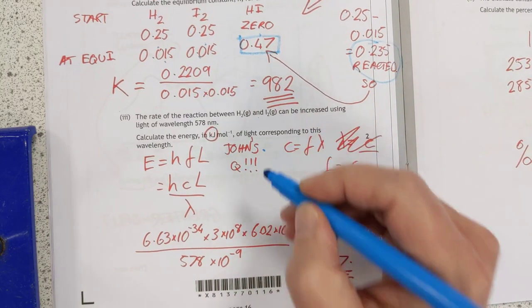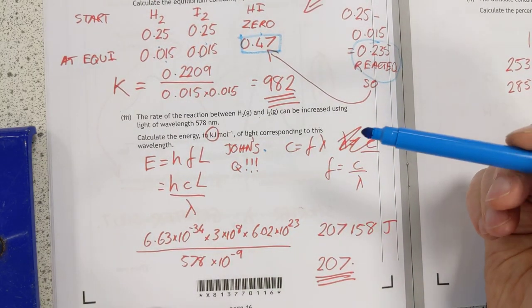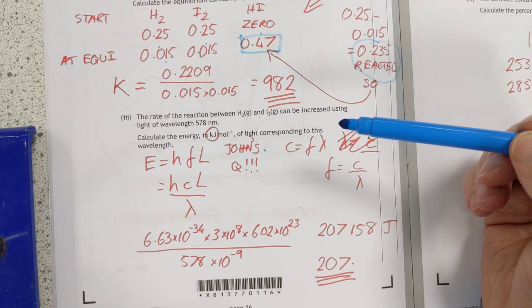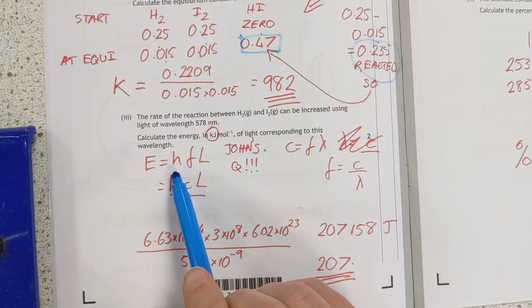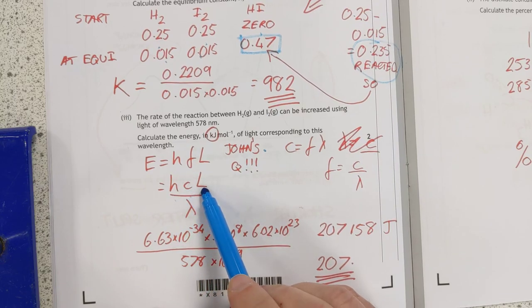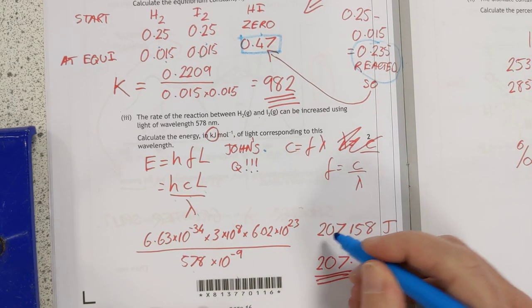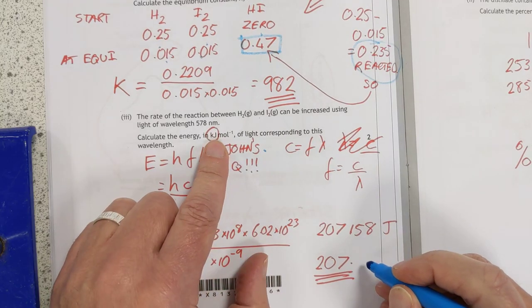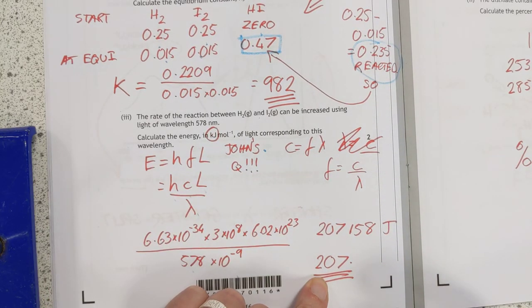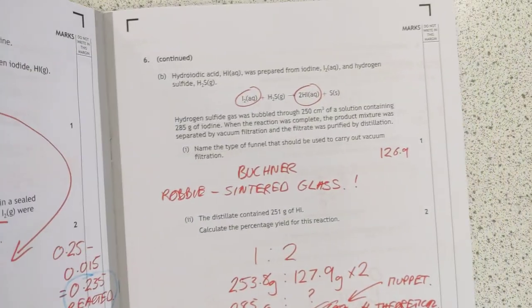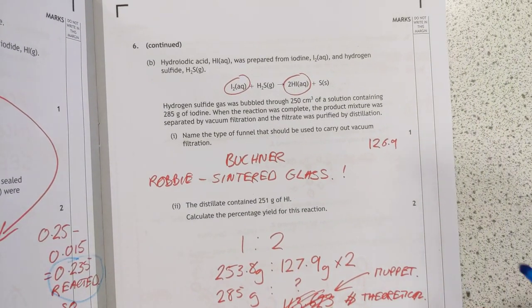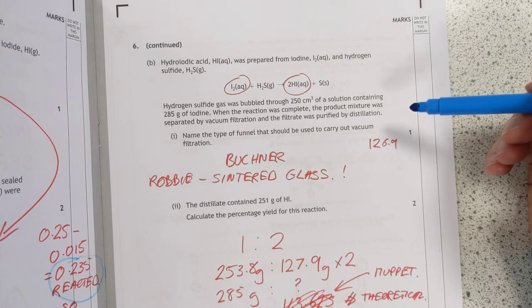John, John McKinnon, this is your question, John. So, E equals H, F, L, or if you do some substitutions, E equals H, C, L, or lambda. Pop the numbers in, remembering that's nanometers there, and we got, this comes out in joules, so that's the number kilojoules, which is what they actually want, so 207. Sounds about right, actually. Don't think I made a mistake in that one. Sounds a feasible energy level for a reddish, yellowy light.